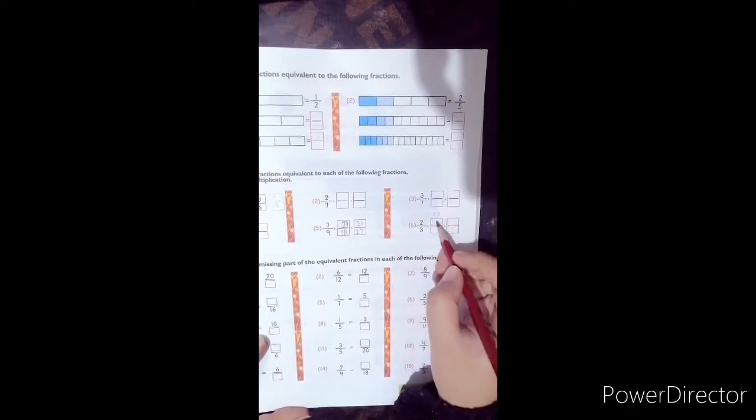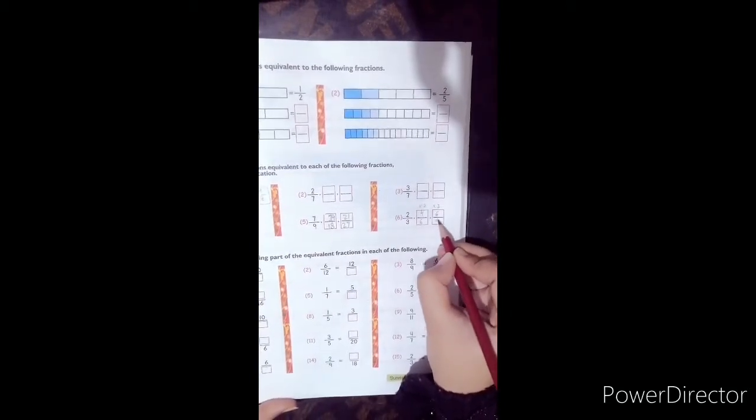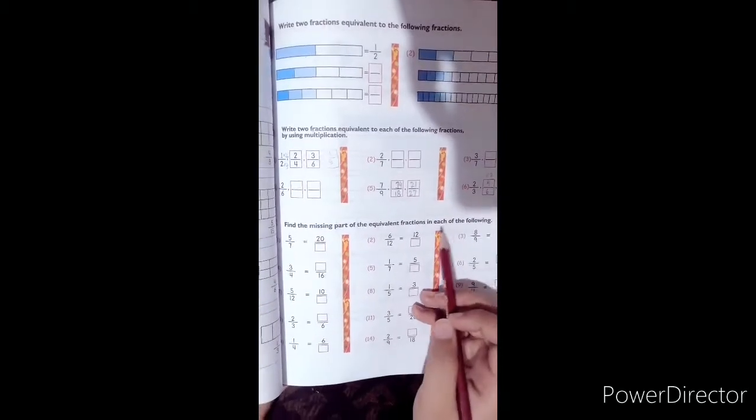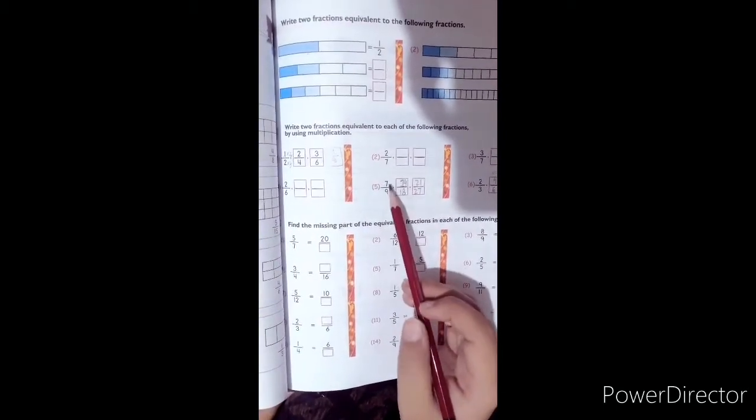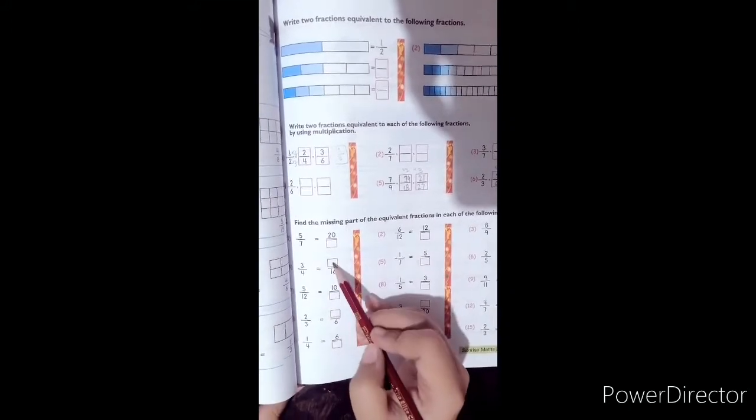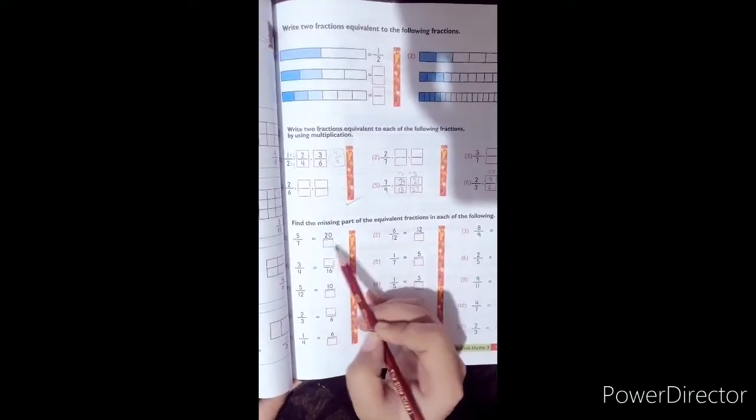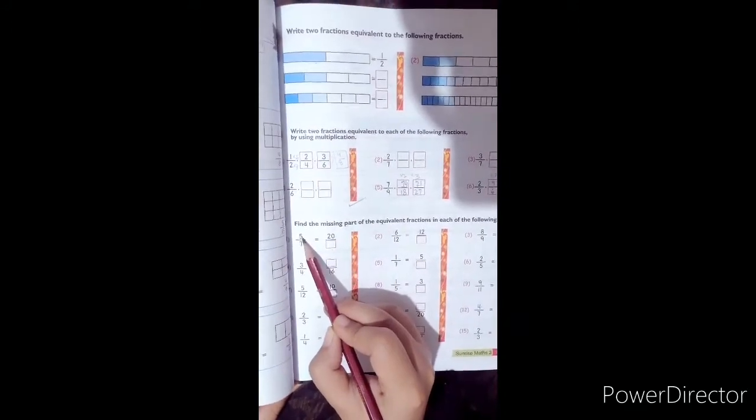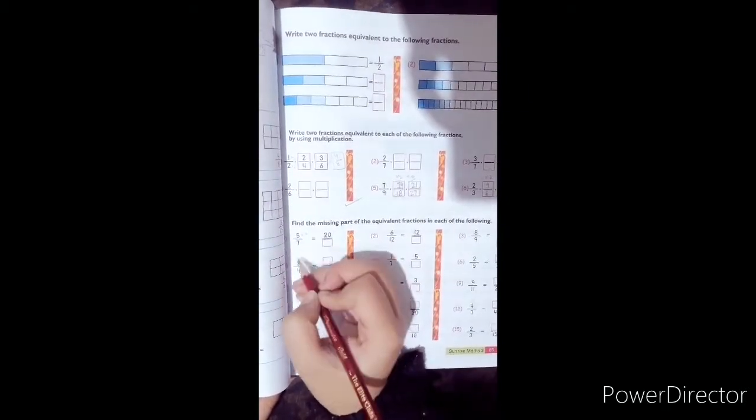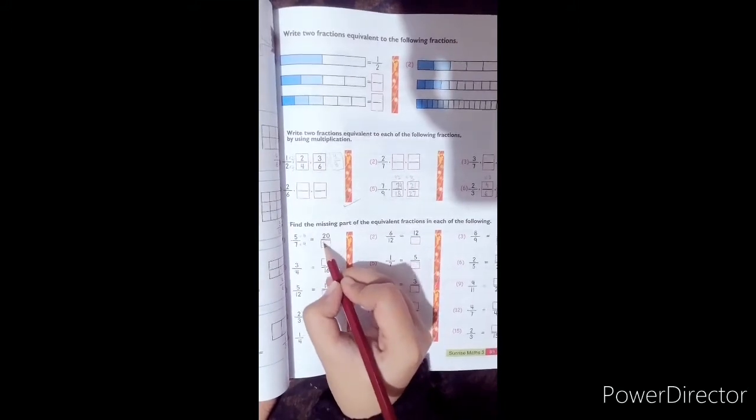Next question: find the missing part of the equivalent fraction in each of the following questions. I have told you that we multiply the numerator and denominator by the same number. Here we have to find the missing part. 5 by 7 is equal to 20 by what? We have to find the missing part. Find the number where 5 in the table equals 20. Which number times 5 is 20? 4 times 5 is 20. If our numerator is 4 times, the denominator means we multiply by 4. 4 times 7 is 28.